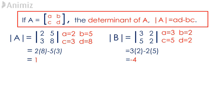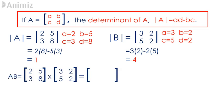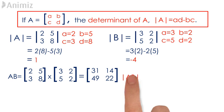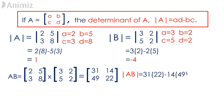In order to find the determinant of AB, we first need to multiply matrix A and matrix B together. The multiplication of these two matrices gives us a 2 by 2 matrix containing the elements 31, 14, 49, 22. Now let's get its determinant using AD minus BC, which is 31 times 22 minus 14 times 49. This gives us the value of the determinant of AB to be negative 4.